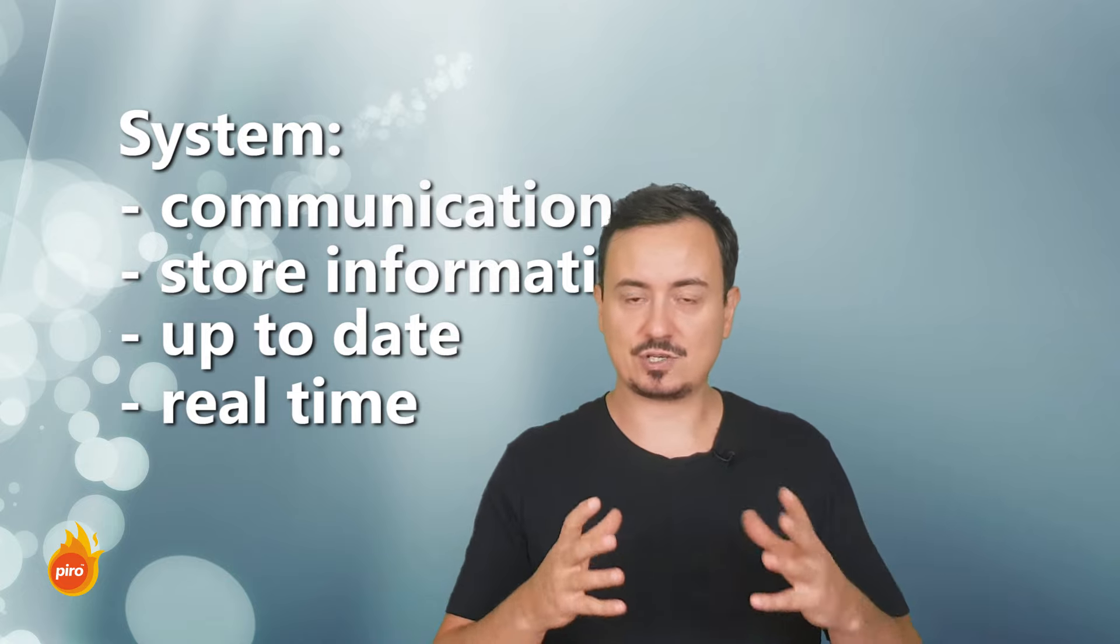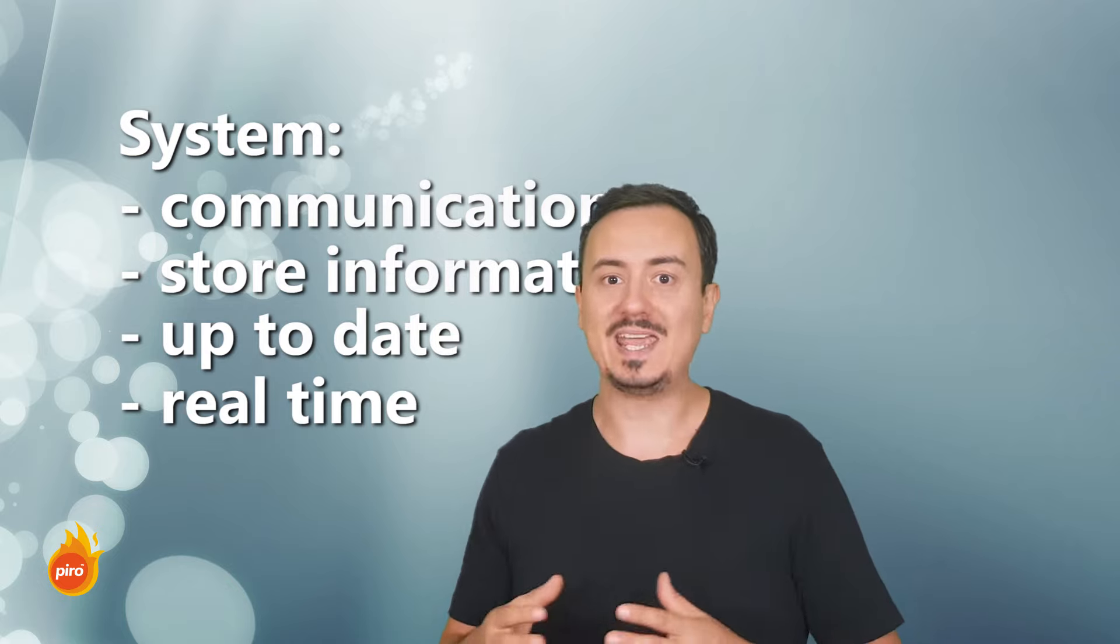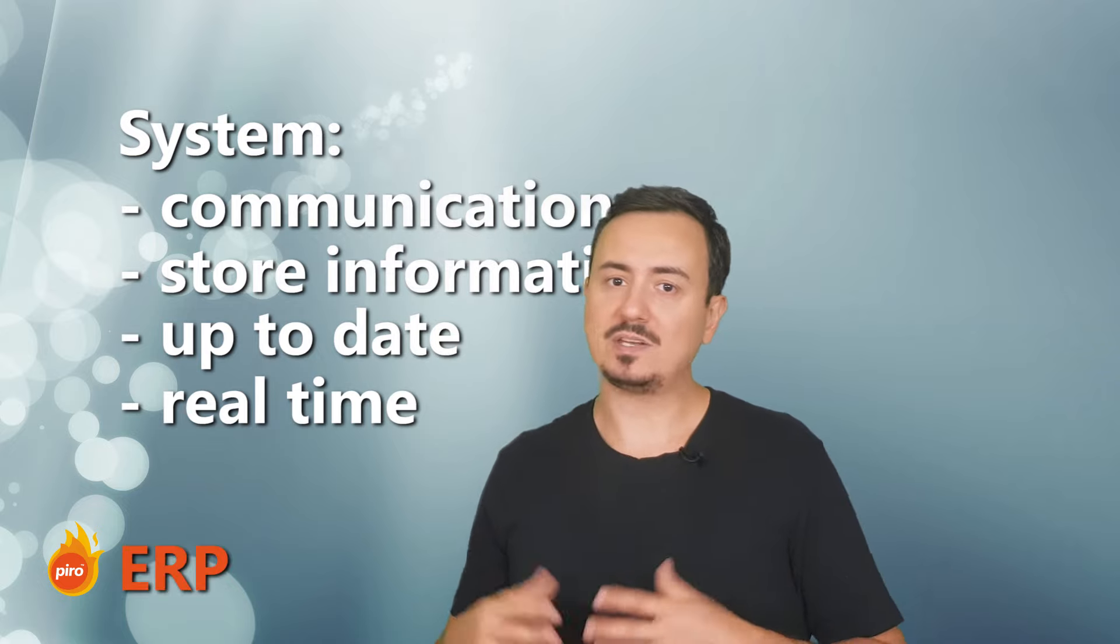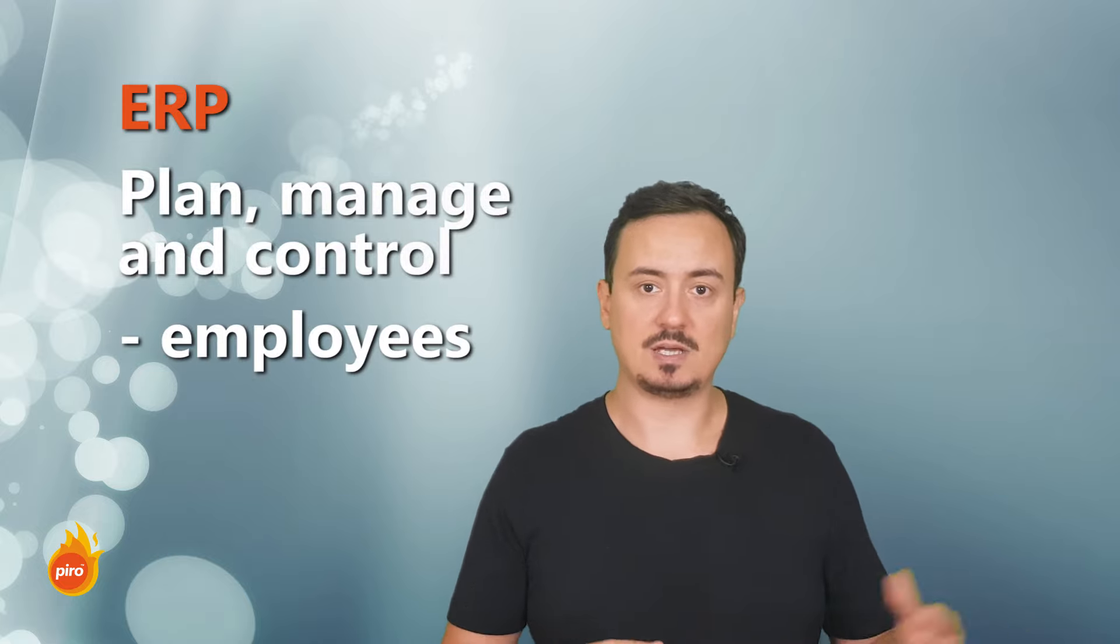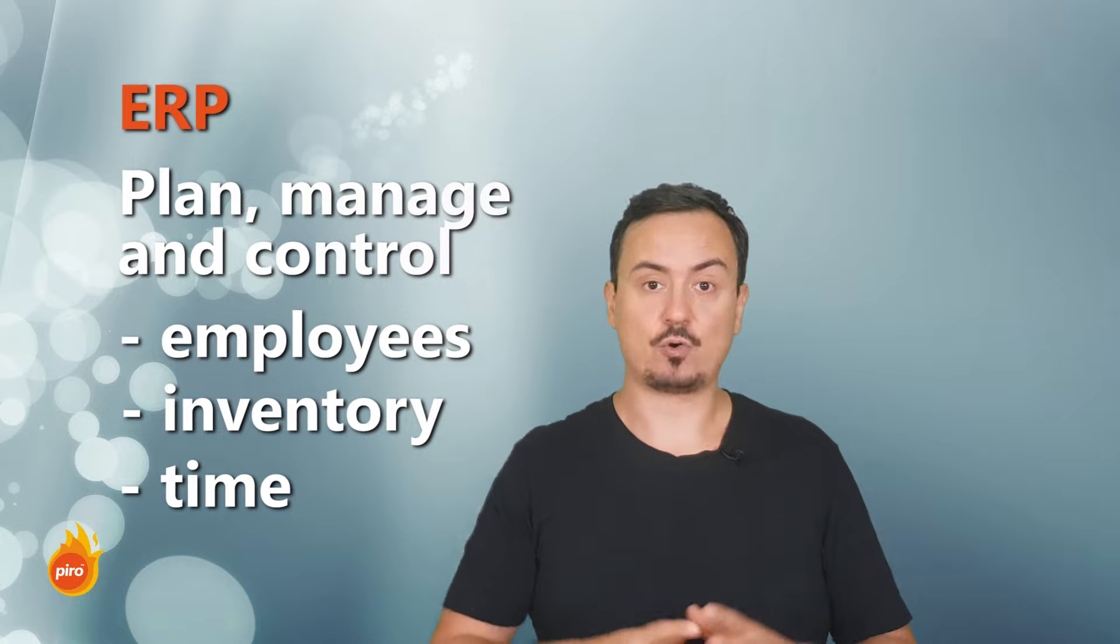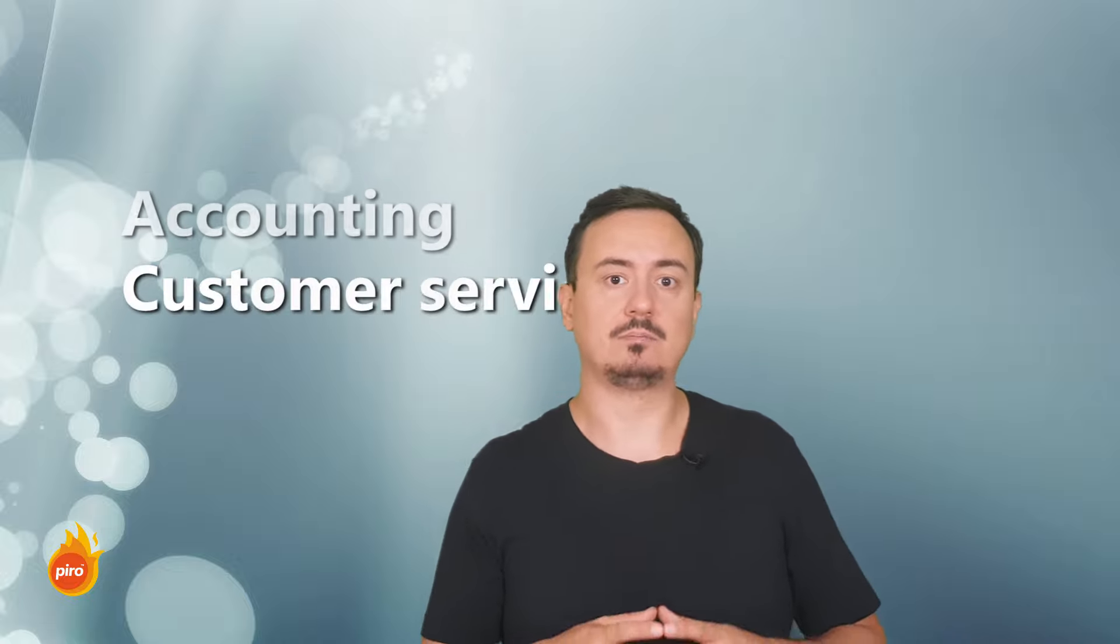Now in business terms, such an information system is called an Enterprise Resource Planning System or ERP. Now while the name may not be self-explanatory, it basically means that it is a system that helps you plan and by extension manage and control your resources like people, inventory, time and so on, on the enterprise or business level. So it's not just in your own head. This system can be as simple as just tracking the whereabouts of your orders, or it can be very complex dealing with every aspect of your business from order management to accounting and customer service.